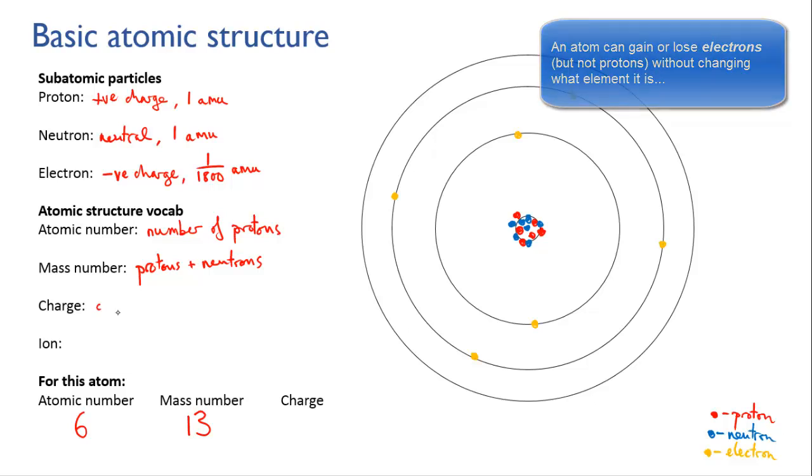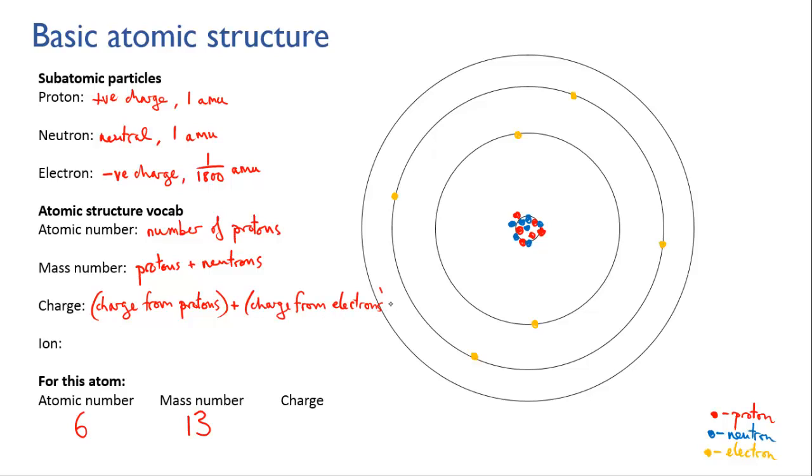To calculate the charge on an atom, look at the total positive charge from the protons and the total negative charge on the electrons, and add them together. If there are more protons, the overall charge will be positive. And if there are more electrons, the overall charge will be negative. In this case here, they're equal. We've got six protons, so that's a charge of plus six. And we have six electrons, so that's a charge of minus six. So we're going to have six plus minus six, so our charge is zero. So it's a neutral atom.